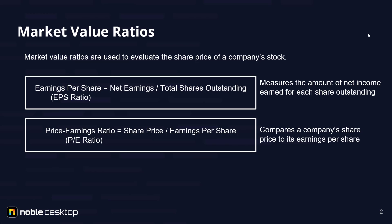Price Earnings Ratio, or PE Ratio, compares a company's share price to its earnings per share. It's calculated as share price divided by earnings per share.